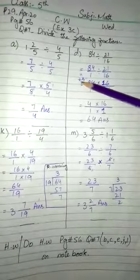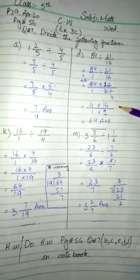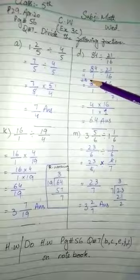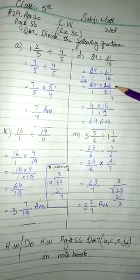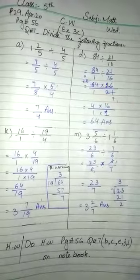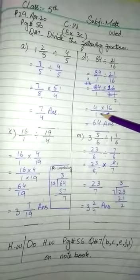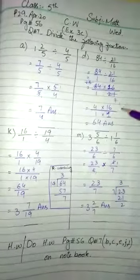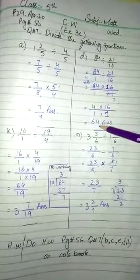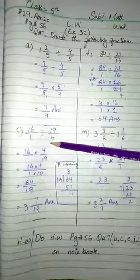Now we have 7 and 28 - these can be cancelled. 7 divided by 7 is 1, and 28 divided by 7 is 4. Now we have 4 times 16 over 1. Since the denominator is 1, we can ignore it. 4 times 16 is 64. So the answer is 64.